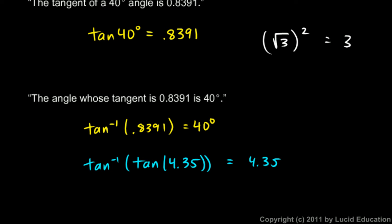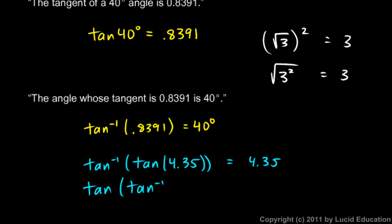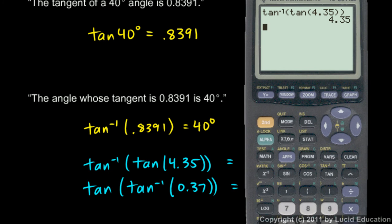And just like you could reverse that — the square root of 3 squared is still 3 — you could reverse this too. The tangent of the inverse tangent of 0.37 should be exactly 0.37. You can see that on the calculator: type in the tangent of the inverse tangent of 0.37, and it gives 0.37.